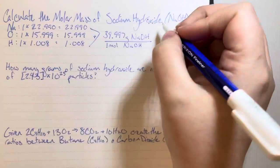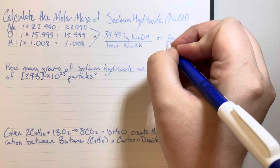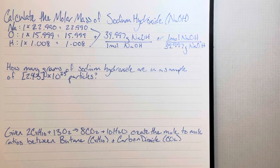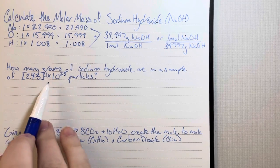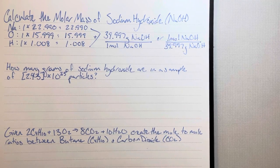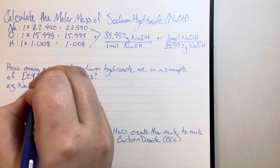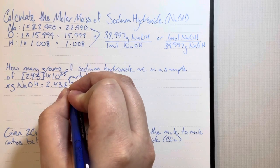I'll go ahead and flip the molar mass in case I need it in a different direction. How many grams of sodium hydroxide are in a sample of 2.43 times 10 to the 25th particles? My number here is in brackets because it could be different than yours. However, the steps needed to solve this problem will be the same regardless. 'How many grams of sodium hydroxide' translates to x grams sodium hydroxide, and '2.43E25 particles' is my given value.